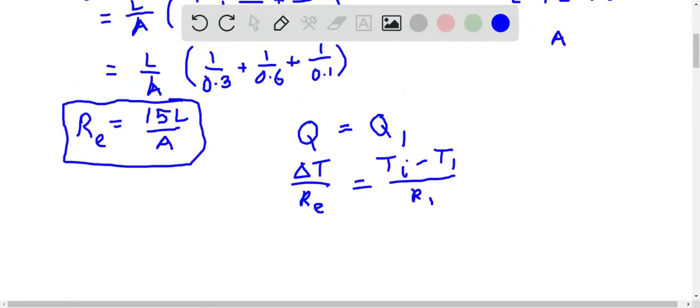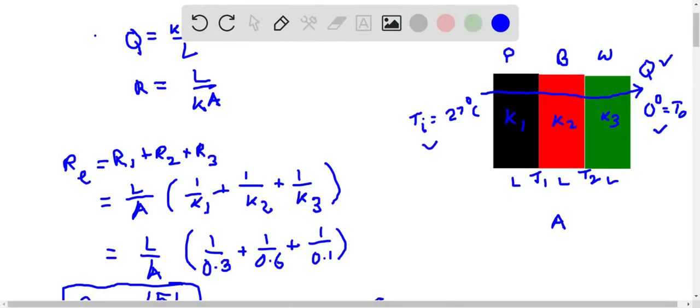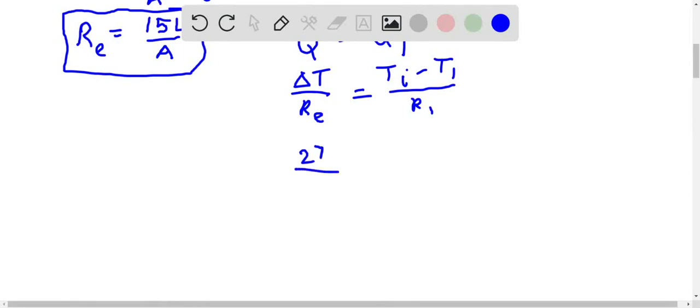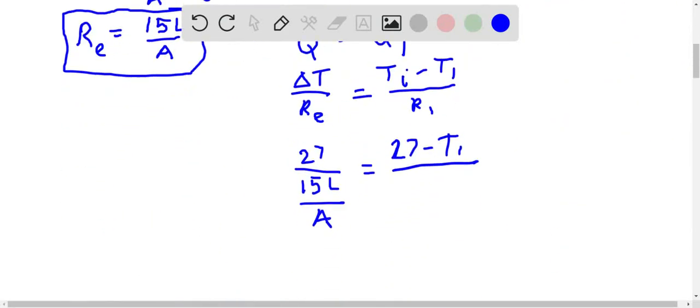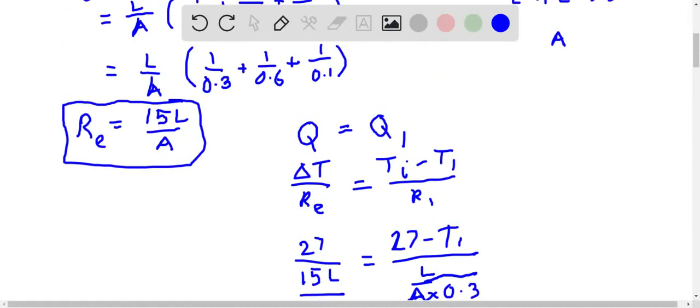ΔT here will be 27 minus 0, the complete interior and exterior temperatures. So 27/Re, Re is 15L/A, which equals Ti (27) minus T1 by R1. R1 will be L/(k1 × A), so L/A times 0.3.